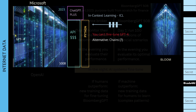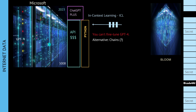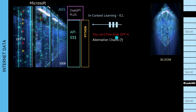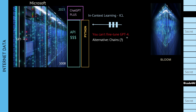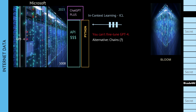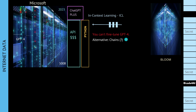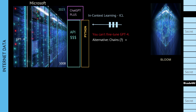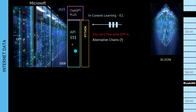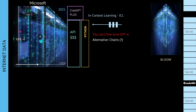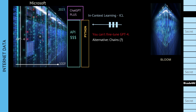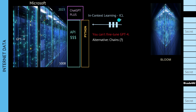Why did Bloomberg decide not to go with GPT-4? The simple reason: you can't fine-tune GPT-4, you can't insert your data into GPT-4 for fine-tuning. The research community discovered that if they can't use GPT-4's weights for training, there is a workaround called in-context learning.